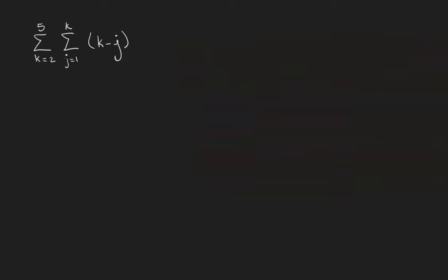Here's an example where we can't work in whatever order we like because the j's depend on the k's. So the best practice here is to start with the k's. That's equal to the sum as j goes from 1 to 2, this is the k equals 2 term of the sum, 2 minus j.